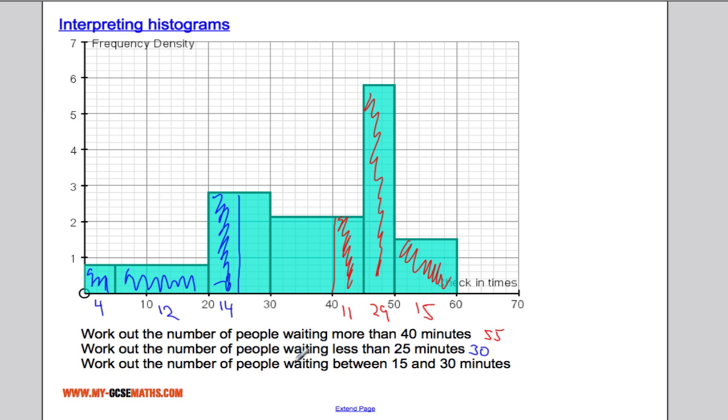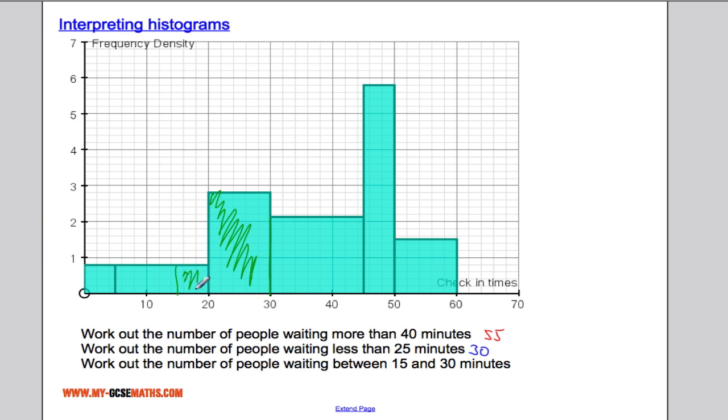This question here now, we're asked to work out the number of people waiting between 15 and 30 minutes. So again, I'm interested in, let me just actually clear off this stuff here so we can see exactly what's going on, between 15 and 30 minutes. So I'm effectively interested in the area of this bar and the area of this bar. So this is 5 in width and 0.8 in height. Multiplying those together we get 5 times by 0.8, we get 4. And this is 10 multiplied by 2.8 which is 28. Adding those together we get 32 people.